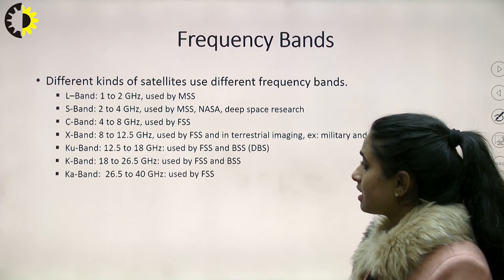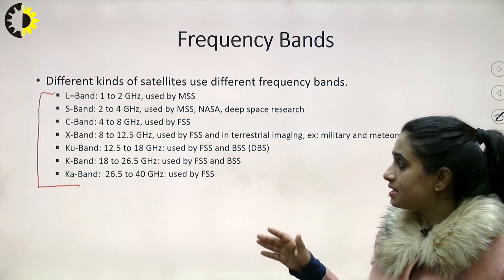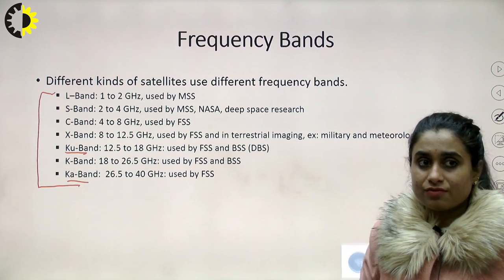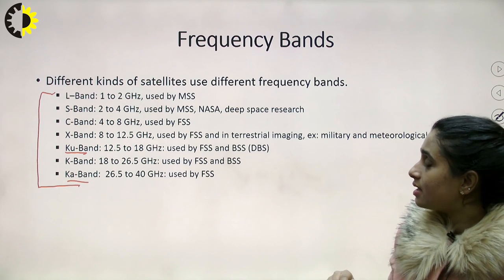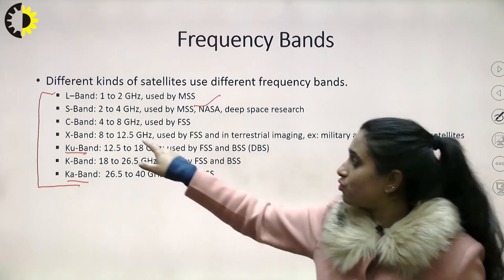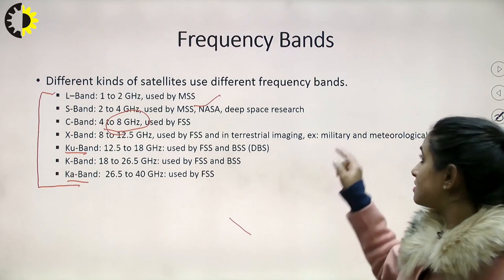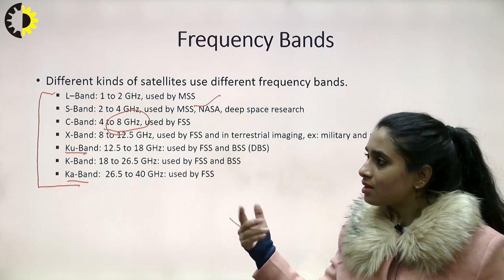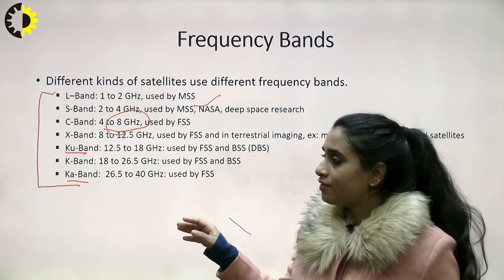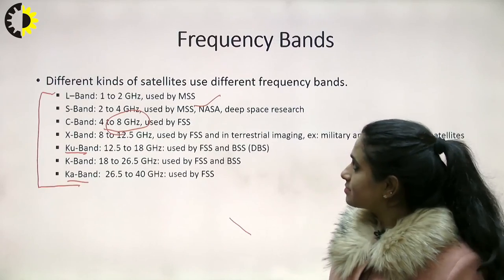Let us talk about frequency bands, which are very important in satellite communication. We have L band (1 to 2 GHz), mostly used by mobile satellite services; S band; C band (4 to 8 GHz), which is mostly used; X band; Ku band; K band; and Ka band. Frequency bands are of very much importance in satellite communication. C band is mostly used, and that's it for today. Thank you.